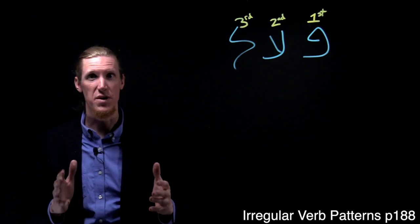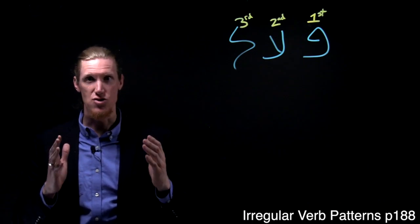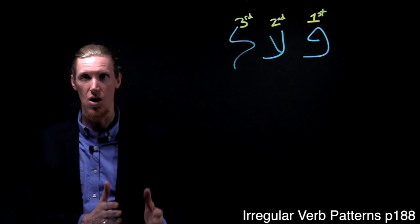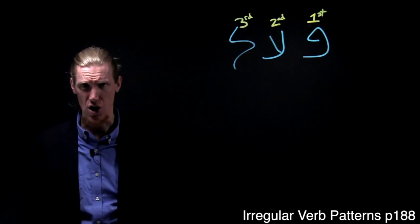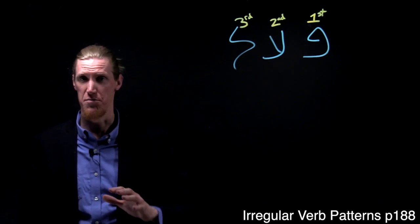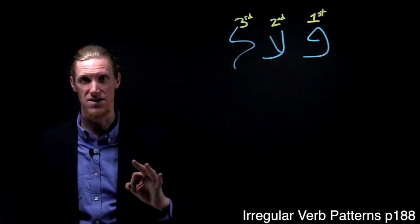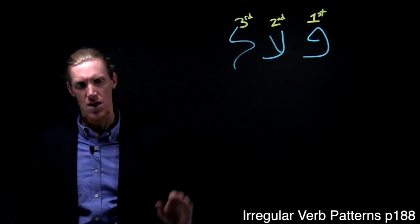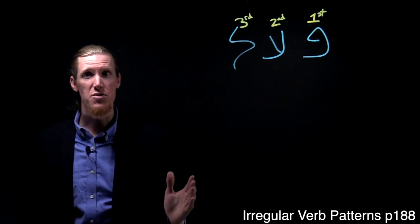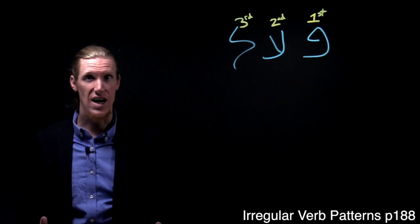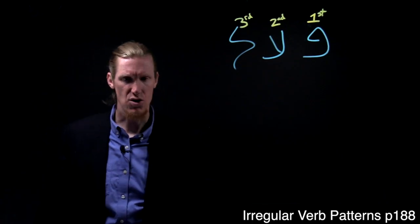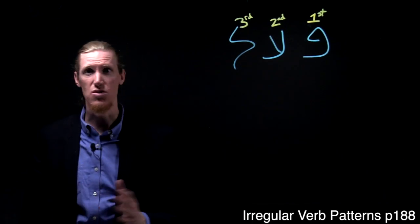Most of the verbs you've been introduced to have strong consonants in all three root positions. You'll recall verbs are formed, the basis of every verb is three consonants. That forms the root. For many verbs, all three of those consonants are what we call strong consonants, and so the vocal pattern works just the way it's supposed to.